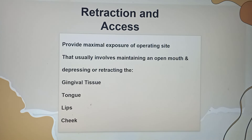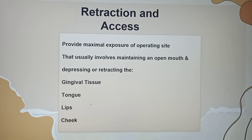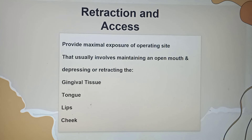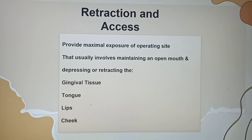Next, retraction and access — it provides maximal exposure of the operating site. It usually involves maintaining an open mouth and depressing or retracting the gingival tissue, tongue, lips, and cheek. The most common way of retracting is through a mouth mirror, but you should hold the mouth mirror in the right direction; otherwise you could irritate the patient's soft tissue or the corner of the mouth could be torn.